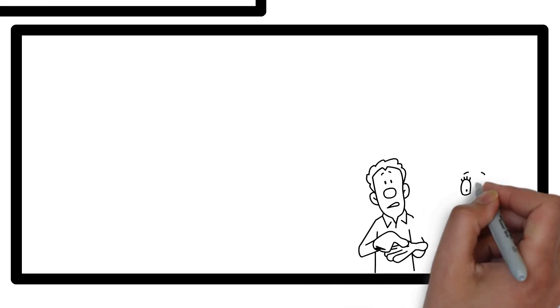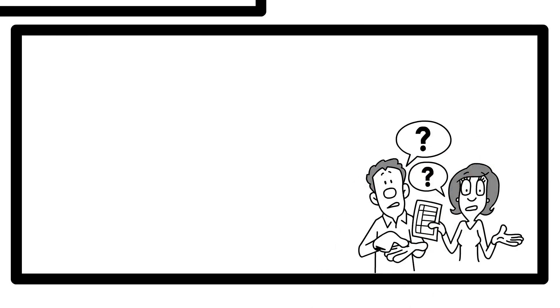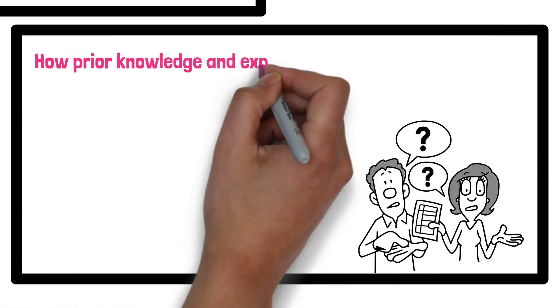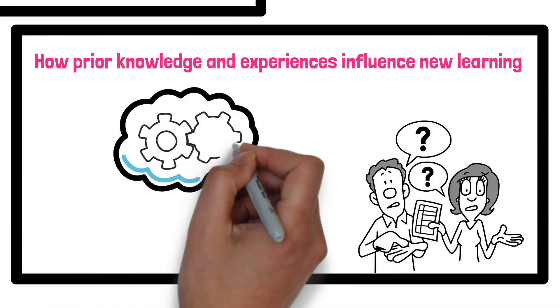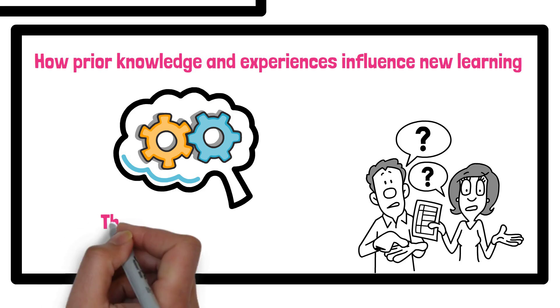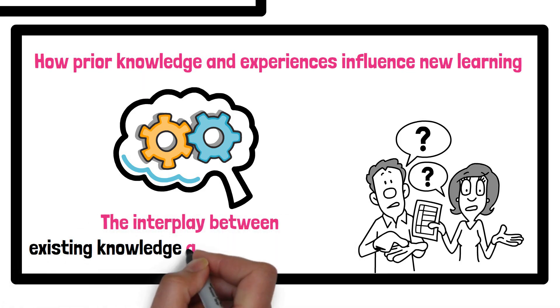Third, some critics argue that the theory does not fully explain how prior knowledge and experiences influence new learning. It tends to emphasize the linear stages of processing without considering the interplay between existing knowledge and new information.